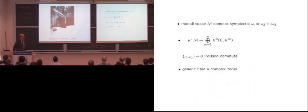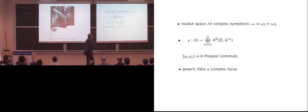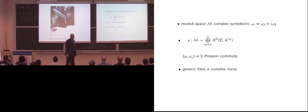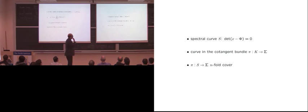An integrable system: the map is proper and onto a vector space. Choosing a basis, I have functions pi and pj which Poisson-commute with respect to the symplectic structure. It's an integrable system and the generic fiber is a complex torus. The picture is that it's related to the Jacobian of the spectral curve: the characteristic polynomial equation lies inside the total space of the cotangent bundle of the Riemann surface, since phi is an endomorphism twisted with the canonical bundle, so an eigenvalue x takes values in the canonical bundle.